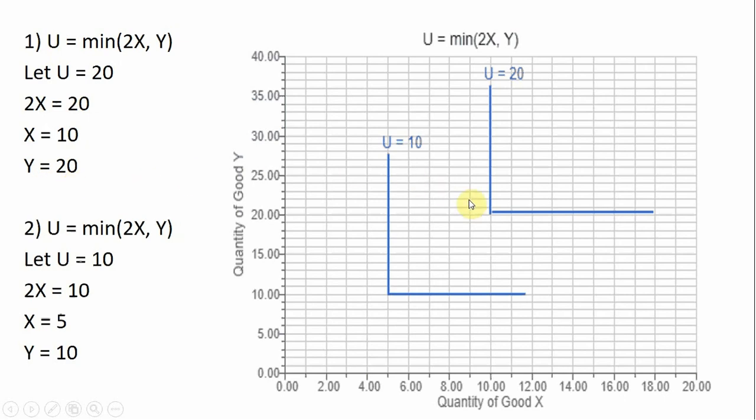And over here, that y equals 20 and x equals 10 defines the elbow on the L-shaped indifference curve where u equals 20. So you find that elbow, and then you're going to do a vertical line up from that elbow, and then a horizontal line exactly across from that elbow point. And all points along this L-shaped indifference curve give this consumer exactly 20 units of satisfaction.